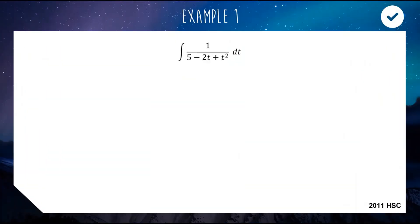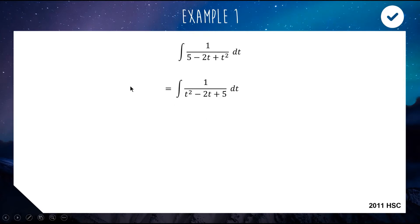Here's our first example: we have the integral of 1 over (5 − 2t + t²) dt. This is actually from the 2011 HSC paper. Here's how we're going to handle it. First, we'll rewrite the integral in a more friendly form — I like my quadratics written the right way forward. And now, as you may expect from the title of this video, we are going to complete the square on the bottom of this fraction. When you have 1 over a quadratic and you're integrating, a good option is to complete the square.